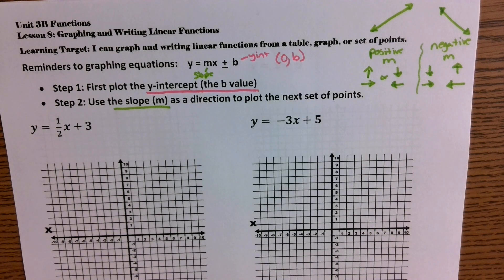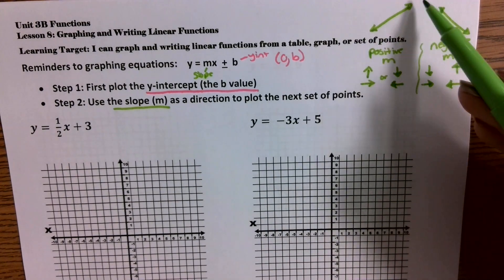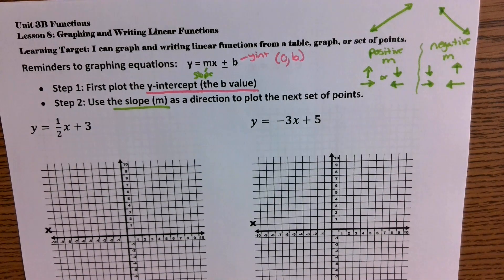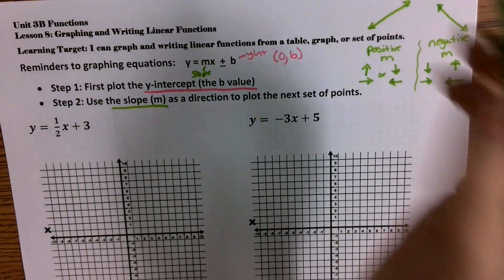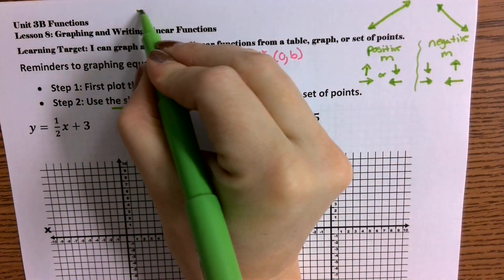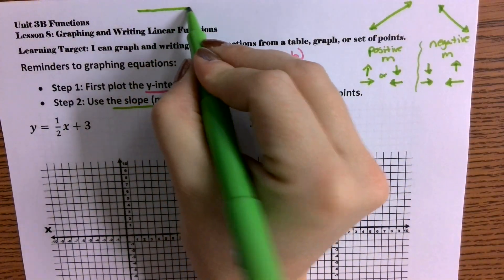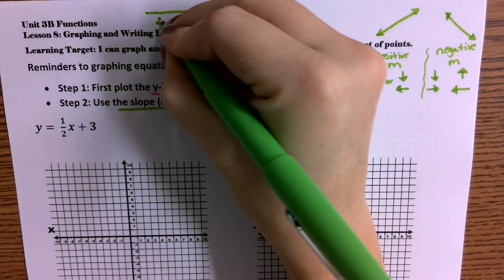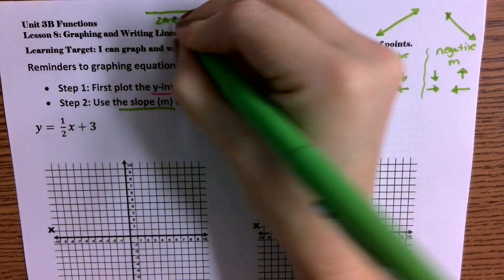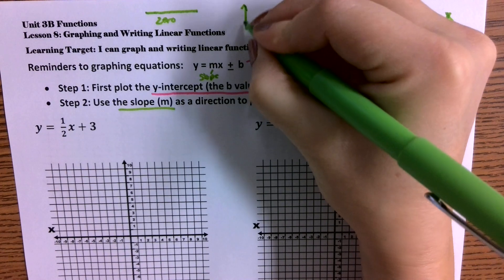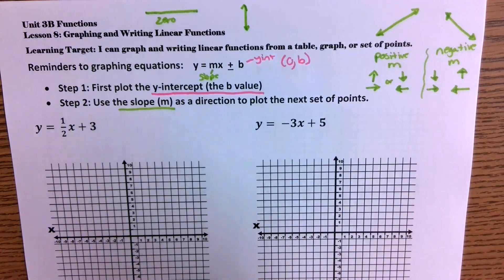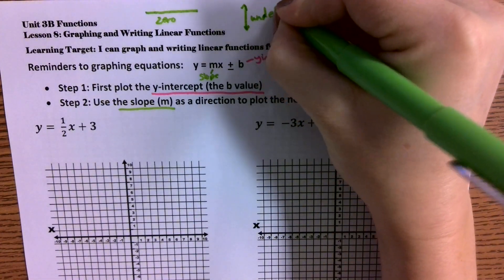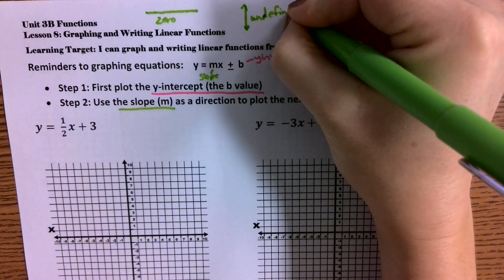Remember: slope going uphill — positive. Slope going downhill — negative. Who remembers what a horizontal line's slope is? Zero. Good. And when it's a vertical line, it's called undefined. I just wanted to make sure you guys understand that.